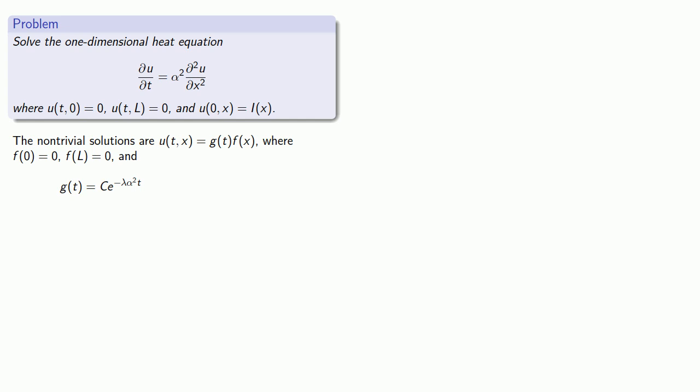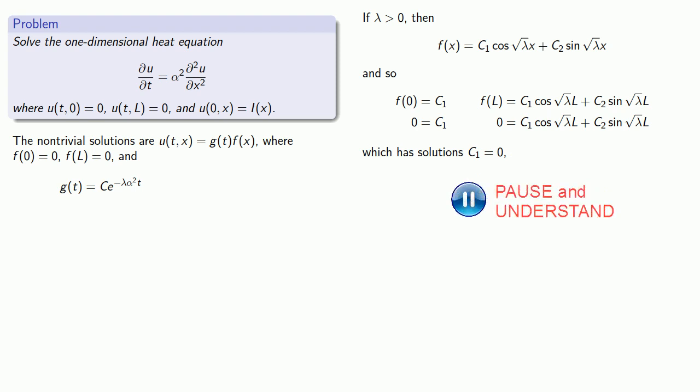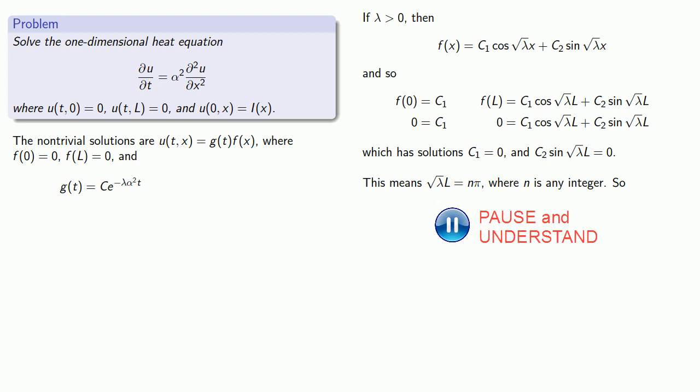So if lambda is greater than 0, then our eigenvalues will turn out to be complex and our solutions will have the form of a trigonometric function. Substituting in our boundary conditions, so c1 has to be 0. There's no other possibility. Now if c1 is 0, then in order for our second boundary condition to be met, c2 sine square root lambda l must also be equal to 0. This means that square root lambda l equals n pi, where n is any integer. And so our function looks like c2 sine of n pi over l x. And if we want to know the value of lambda, we can take our equation and find that lambda is equal to n squared pi squared over l squared.